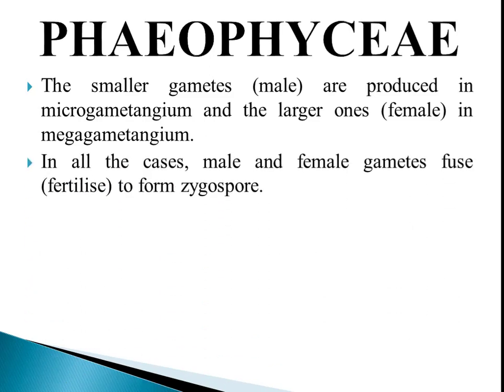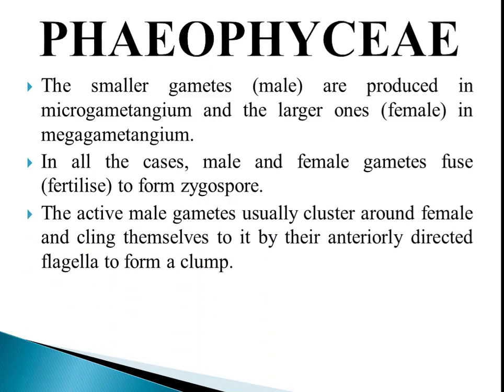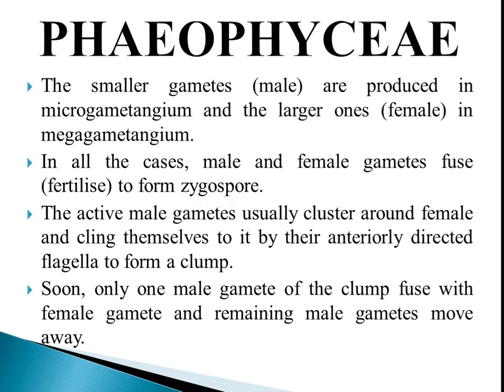In all cases, male and female gametes fuse to form a diploid zygote. Male gametes cluster around the female gamete and attach by their anteriorly directed flagella to form a clump; then a single male gamete fuses with the female gamete to complete fertilization, and the remaining gametes separate.